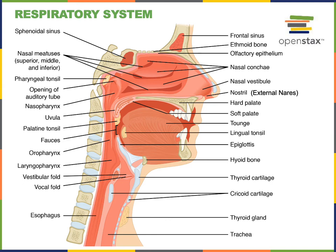The nasal cavity also opens into the paranasal sinuses within the sphenoid bone, frontal bone, ethmoid bone, and maxillary bones. The paranasal sinuses function to decrease the weight of the skull. They also resonate vibrating air to influence the quality of our voice, and they are lined with the respiratory mucous membrane of a ciliated pseudostratified columnar epithelium.